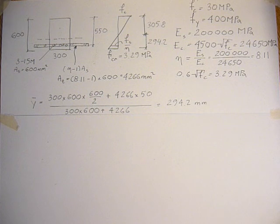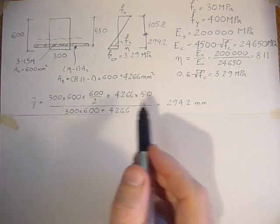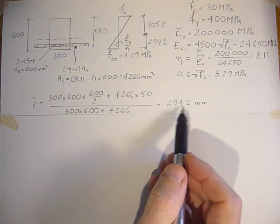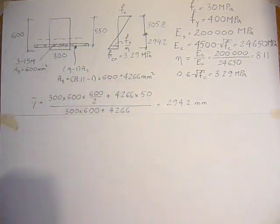Okay, let's continue. We have the neutral axis at 294.2 millimeters above the base of the section.